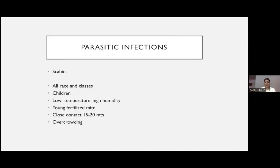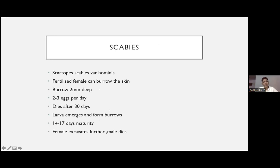Scabies is very commonly seen among all races and classes, commonly in children. Low temperature and high humidity are predisposing factors. The culprit is the young fertilized female mite — Sarcoptes scabiei var. hominis — requiring close contact for 15–20 minutes for transmission. The female burrows 2 mm deep into the skin, lays 2–3 eggs per day, and dies after 30 days. The larvae emerge and form further burrows, maturing within 14–17 days. The female excavates further deep; the male dies.